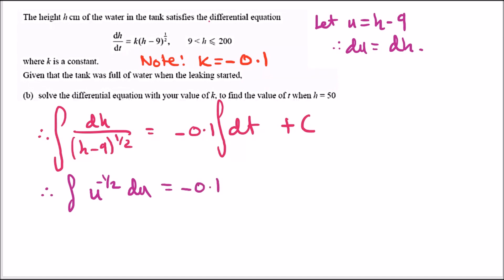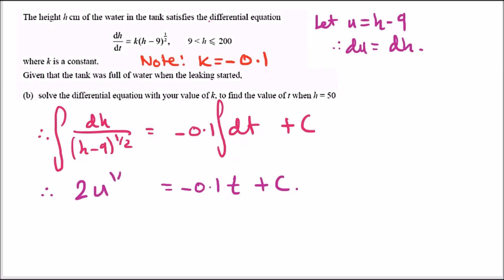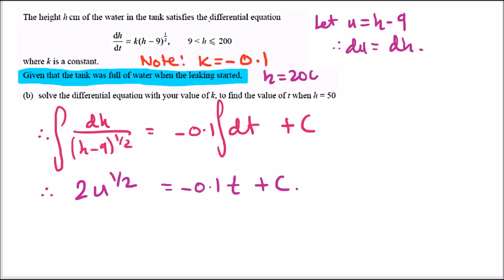Integrating u to the power of negative a half: raise the power by one and divide, giving 2 times u to the power of a half, which equals minus 0.1t plus c. Now, the problem states the tank was full when leaking started, meaning height was 200 at time zero — this is our initial condition.